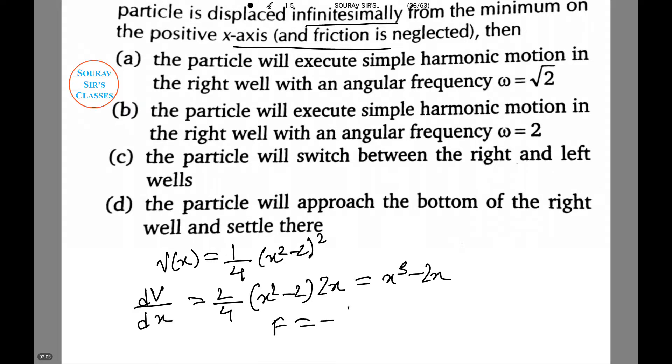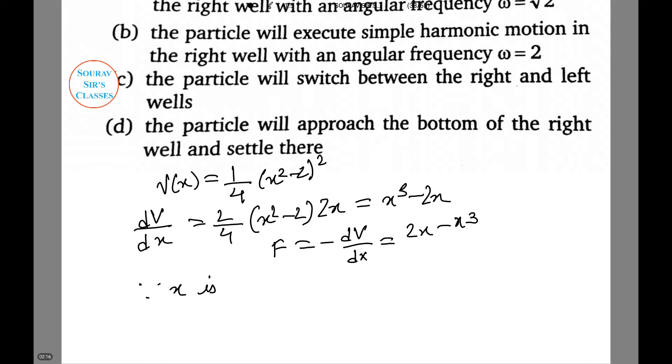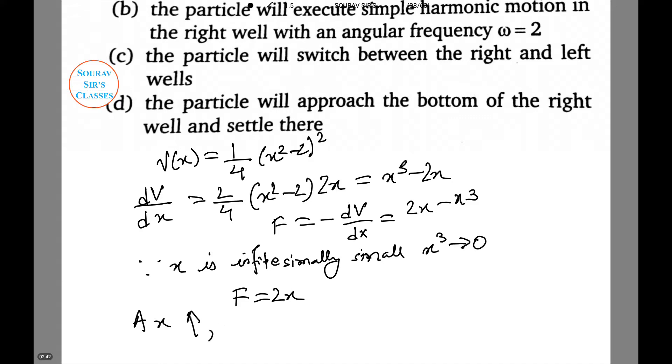Therefore F equals minus dV/dx according to the formula, equals 2x minus x³. Since x is infinitesimally small, thus x³ tends to 0. Thus F equals 2x, which means that as x increases, F increases. Thus the particle will reach at the right well and settle there. Thus option D is the correct answer.